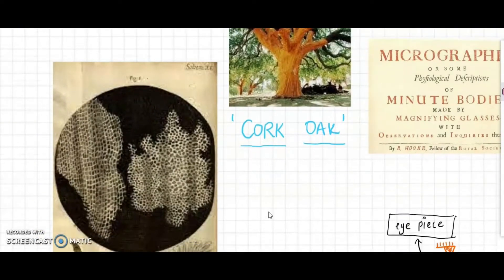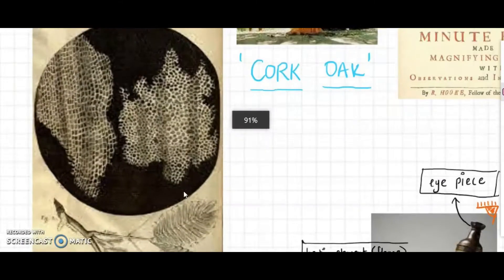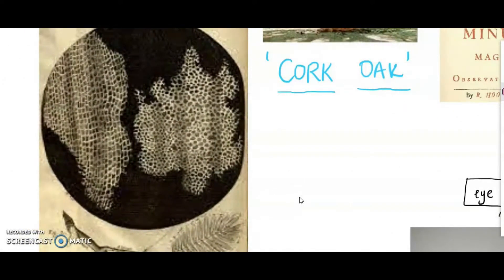And this is what he observed. The bark of a tree is made of dead lignified tissue, so cork is technically dead tissue — just dead cells. You can see that in this image. These square rectangles represent dead cells — dead plant cells. There is no living cytoplasm in them. What he was viewing was just the cell walls of these plant cells.